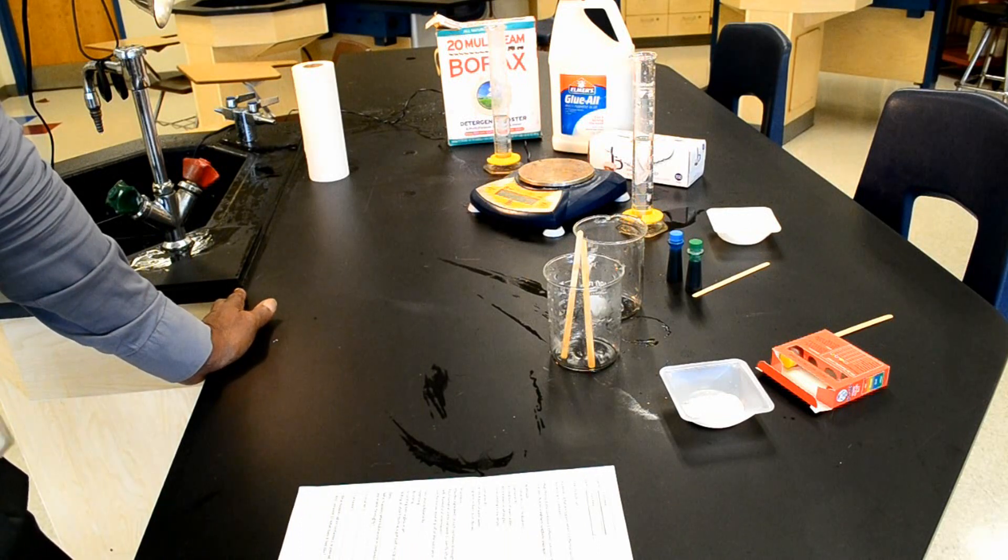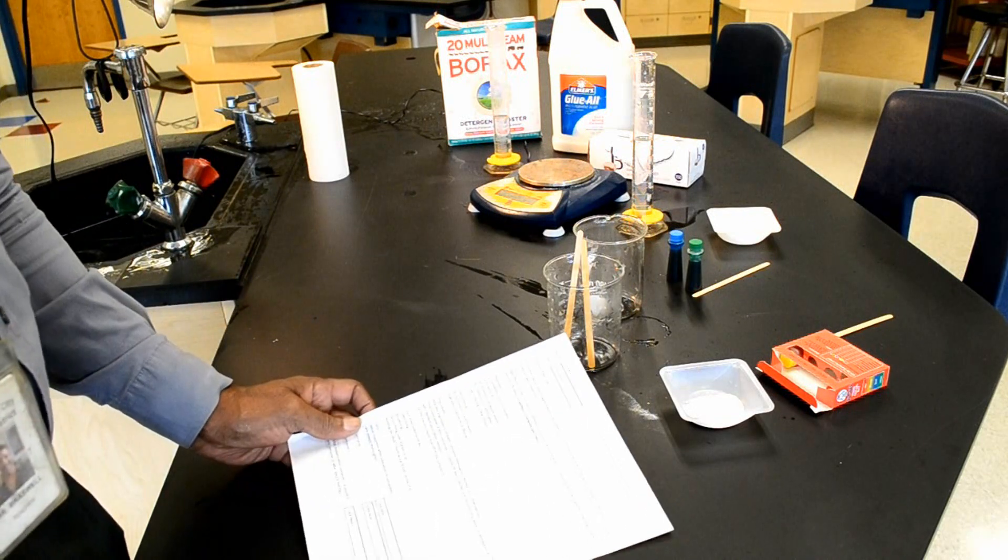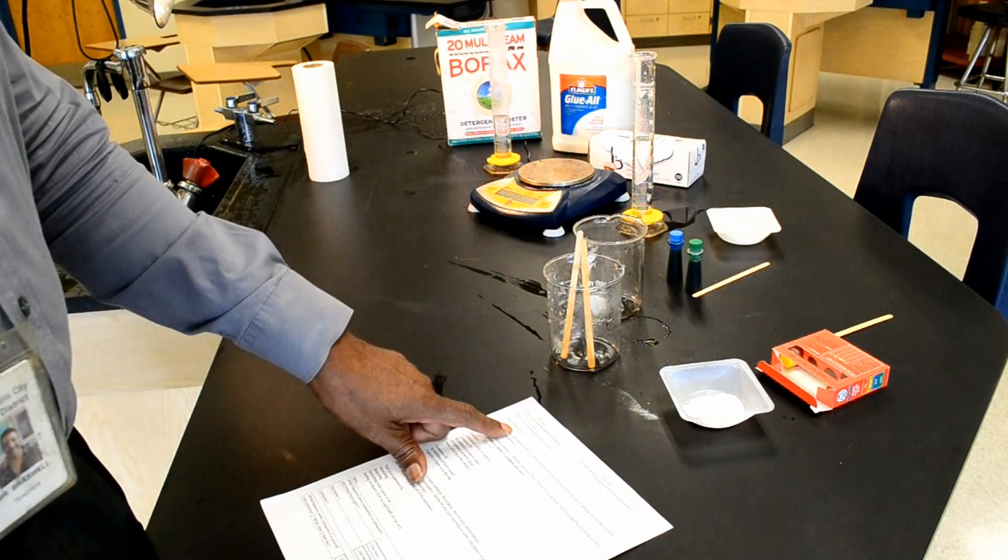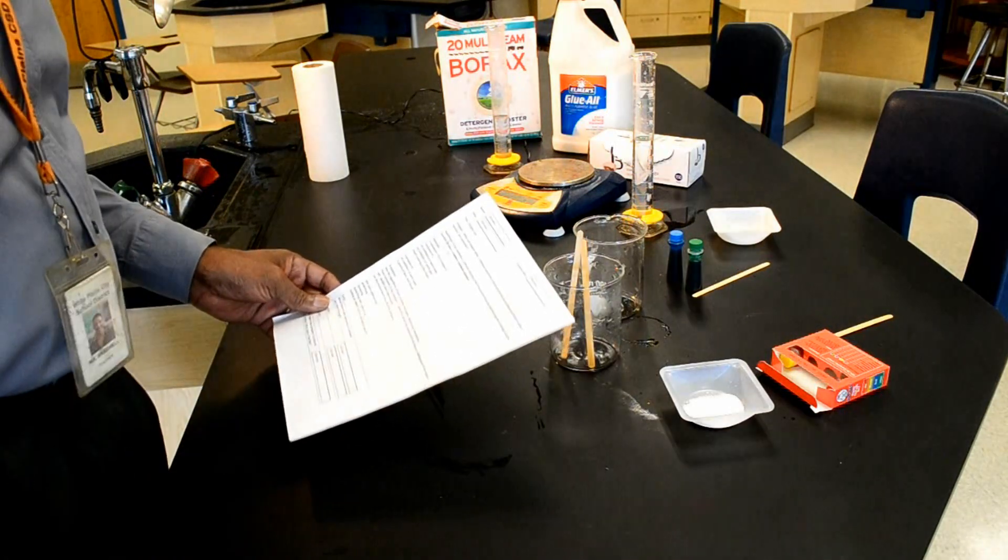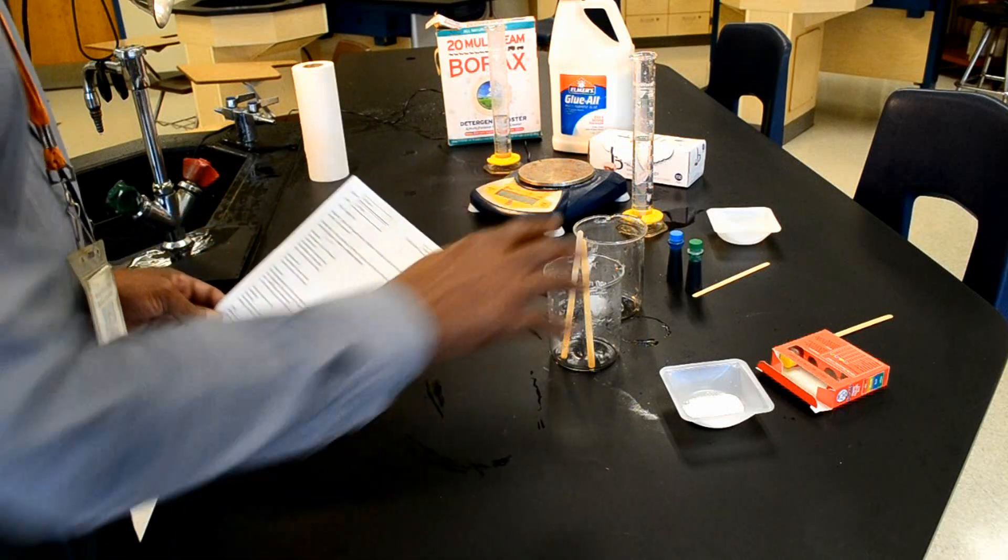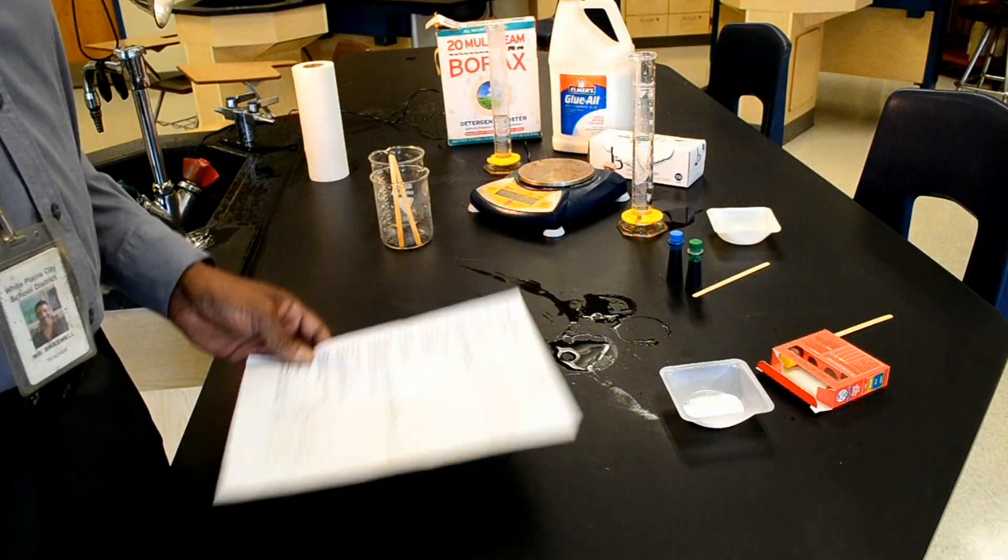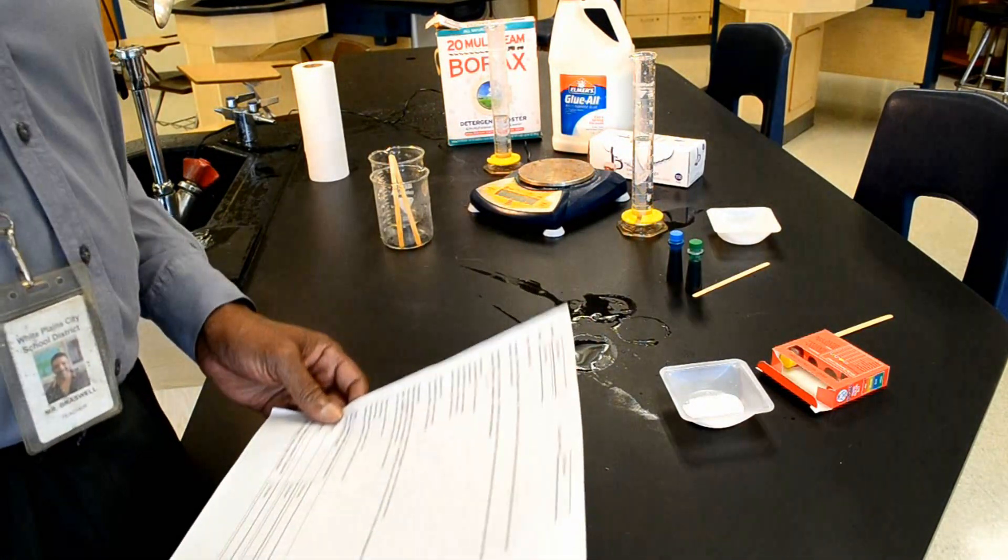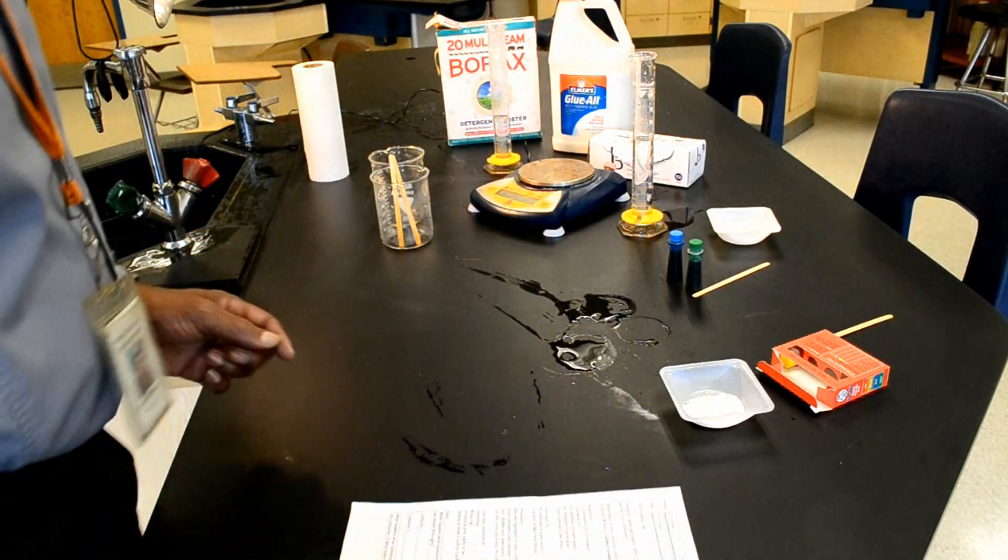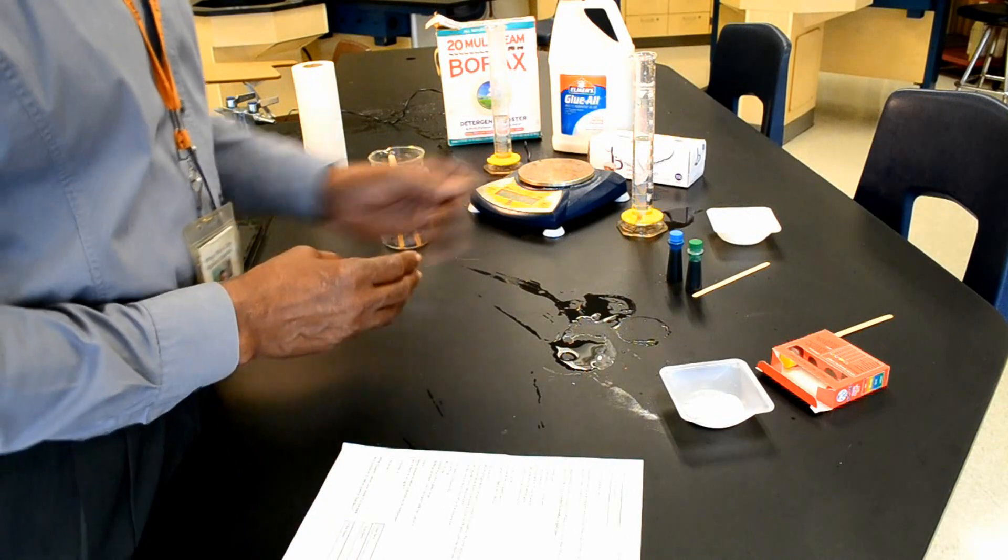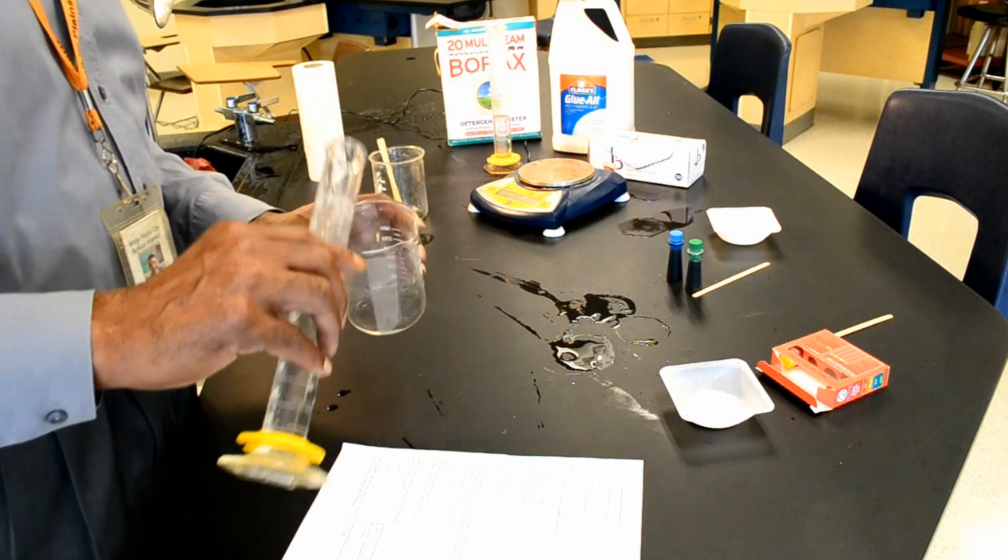To make the flubber, we must begin by using a protocol that is found on your lab sheet, the flubber lab. According to the flubber lab, we need two 250 ml beakers, but these beakers are actually 400 ml. It doesn't matter about the size of the beakers. And in container 1, we must place 65 ml of warm water.